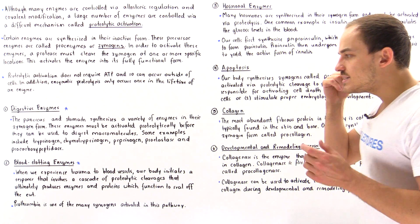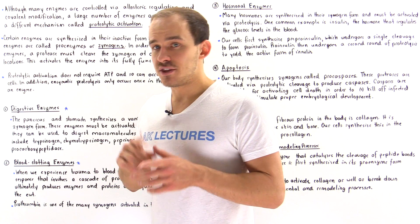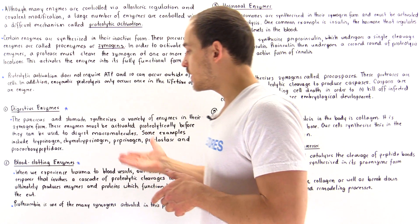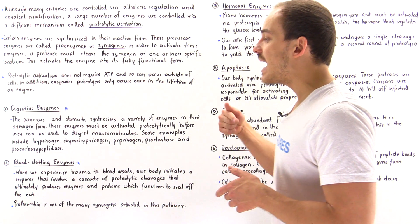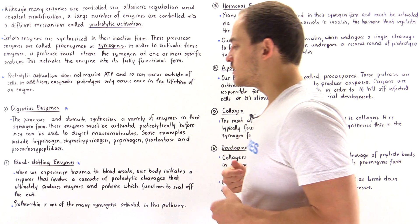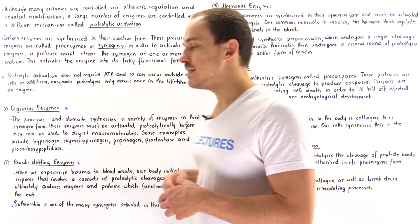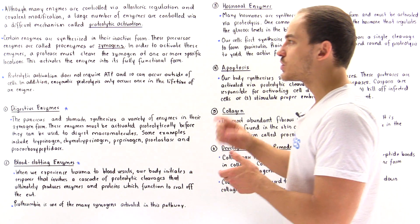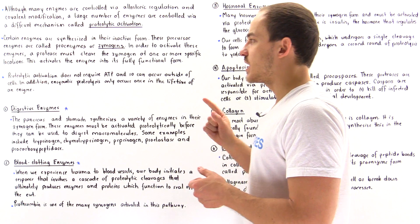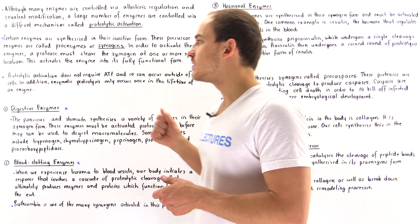One important example we'll look at in the next several lectures is prothrombin, a key zymogen that is activated into thrombin, which is needed to produce the fibrin molecules that form the clot.